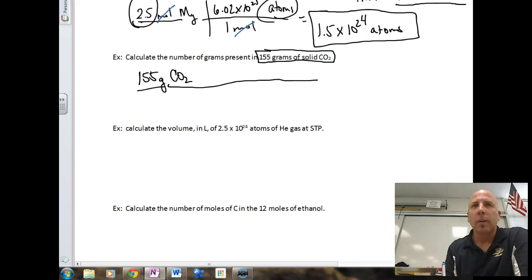Let's go on to the next one here. Another example. Calculate the number of grams present in 155 grams of solid carbon dioxide. Again, our known quantity is 155 grams of CO2. We're looking for number of grams. Well, I think there's a typo there. I just looked at it. The number of grams in 155 grams is obviously 155. That makes life really easy. I think I typed something wrong there. Let's change this. And let's make it the number of moles.